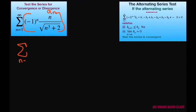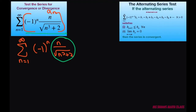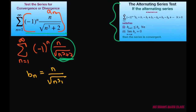So we'll write the sum from n equals 1 to infinity, and I'm going to write negative 1 to the nth power. This will be b sub n, which is n divided by the square root of n cubed plus 2. So this is b sub n.